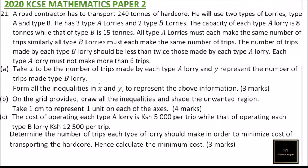This is question number 21, 2020 KCSE Mathematics Paper 2. A road contractor has to transport 240 tons of hardcore. He will use two types of lorries: type A and type B. He has three type A lorries and two type B lorries. The capacity of type A lorry is 8 tons, while that of type B is 15 tons.